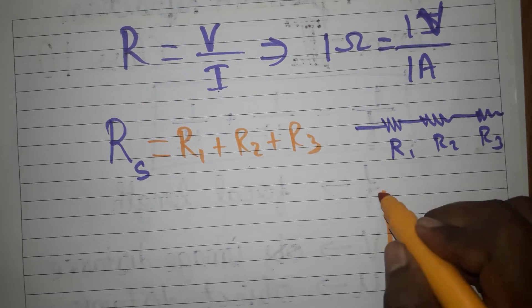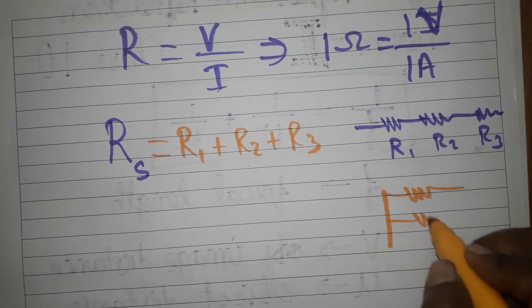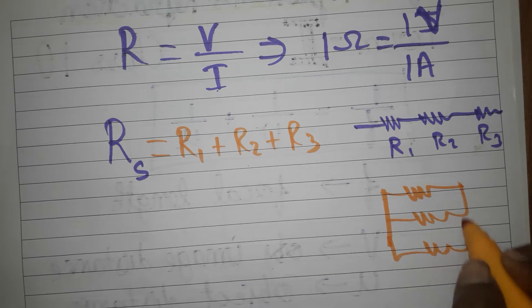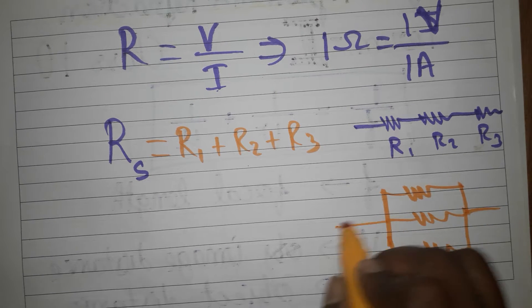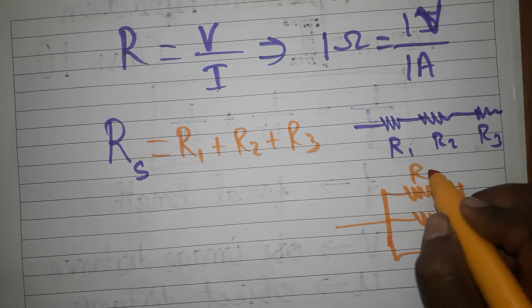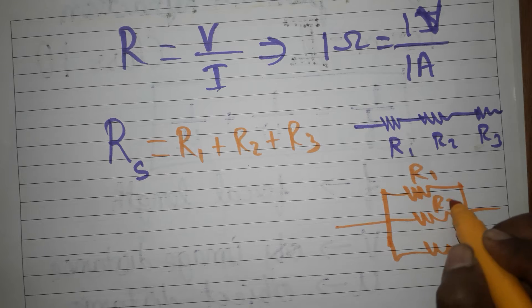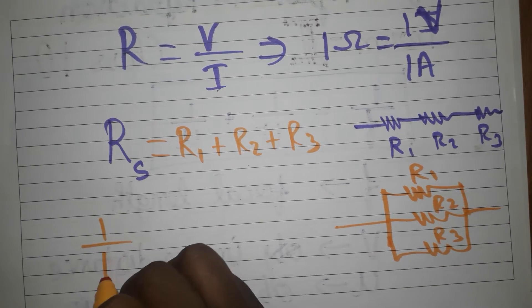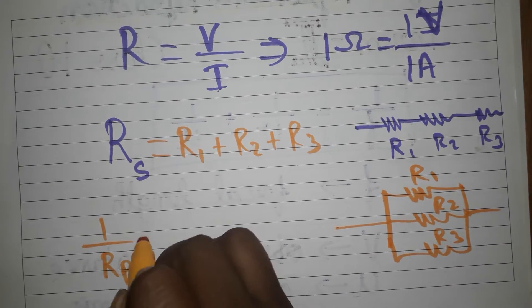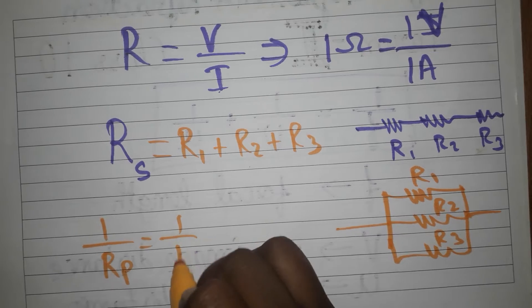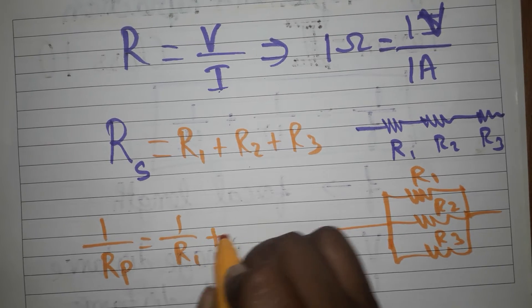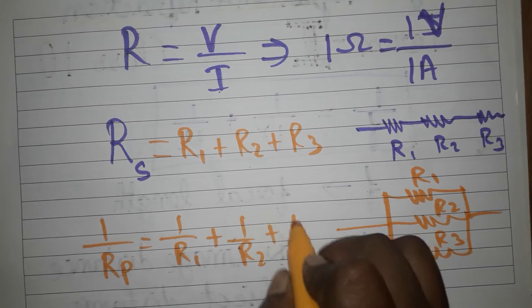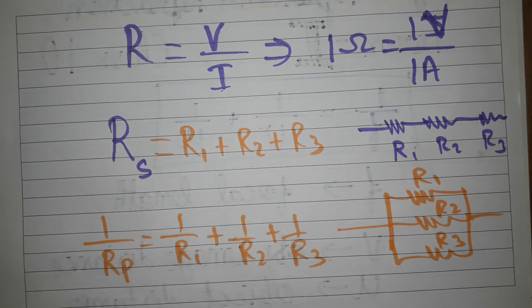In case of three resistances in parallel, the formula is: one divided by Rp is equal to one divided by R1 plus one divided by R2 plus one divided by R3. You can use this for any number of resistances.